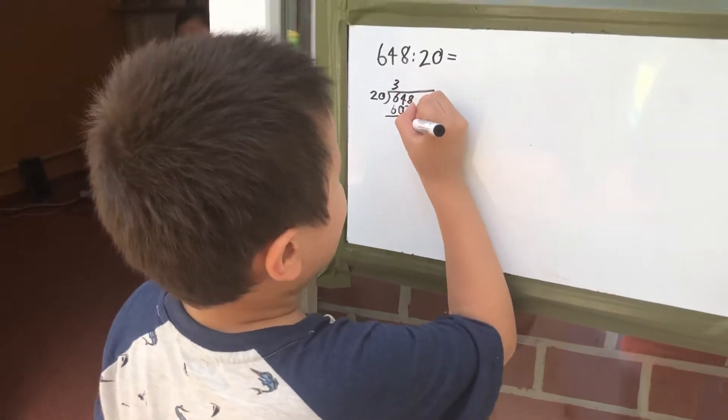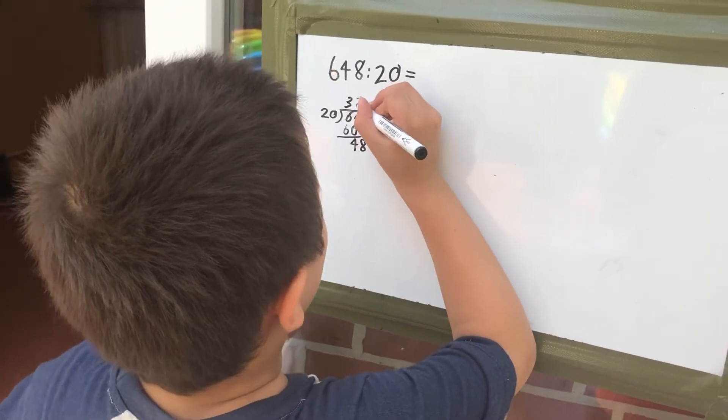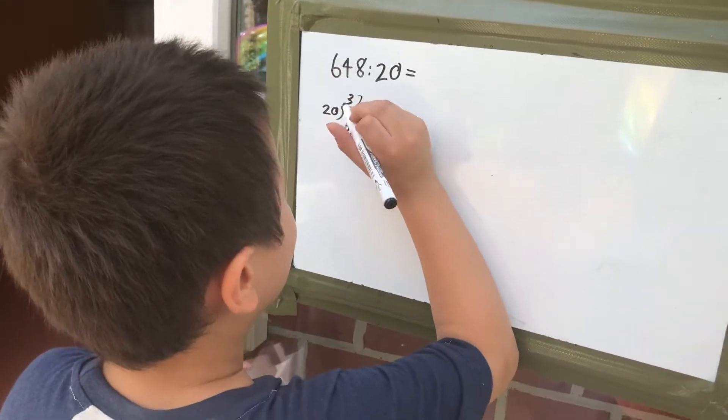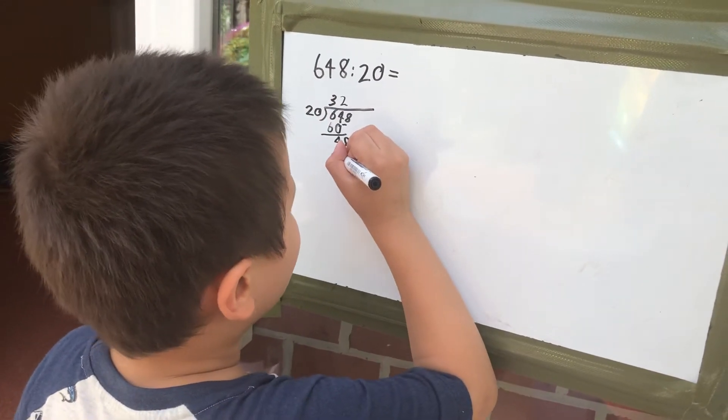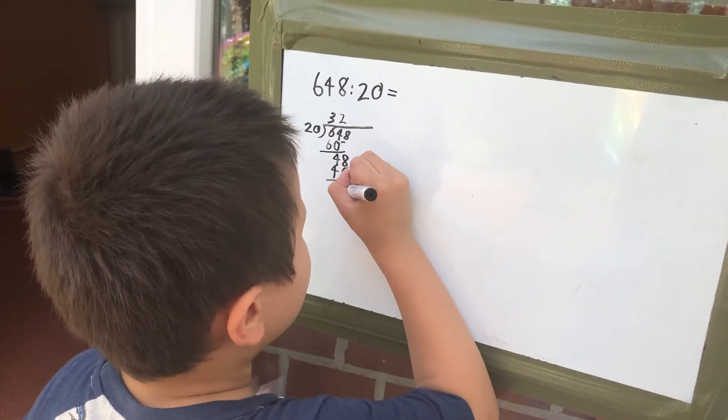Bring down the 8. 20 can go into 48 two times. So bring that, and then 2 times 20 equals 40, and then 8 minus 0 equals 8.